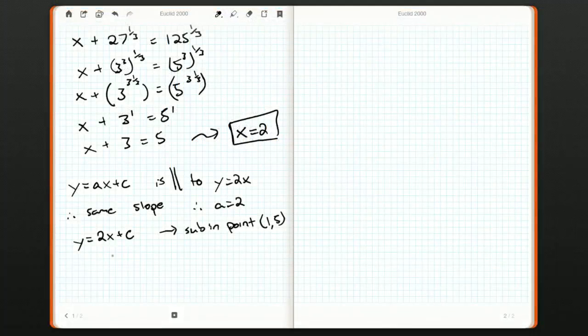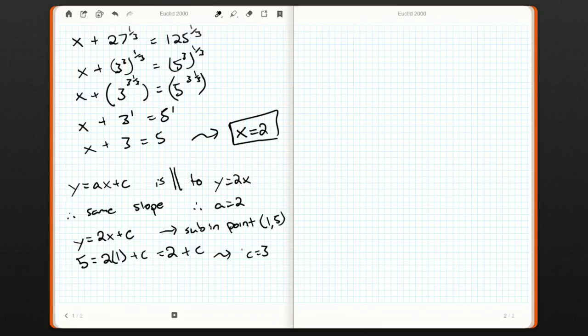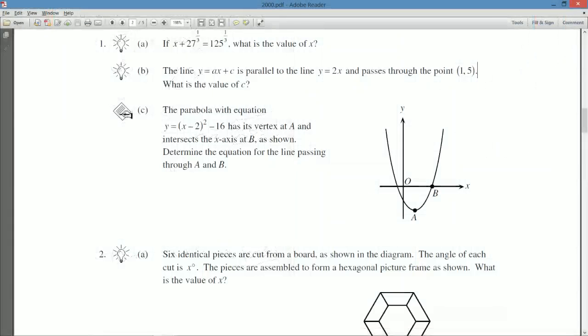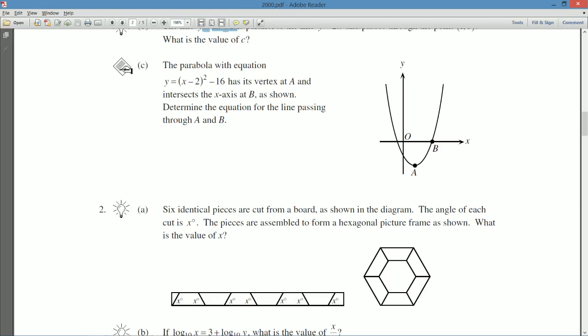So 5 is equal to 2 times 1 plus c. So that's 2 plus c. 5 equals 2 plus c. c is equal to 3. And that's all we're asked for that question. Nice, easy, lowball questions. This first one could be done with a calculator. And the second comes from work that you see in eighth or ninth grade. Just the usual mx plus b form of the line.